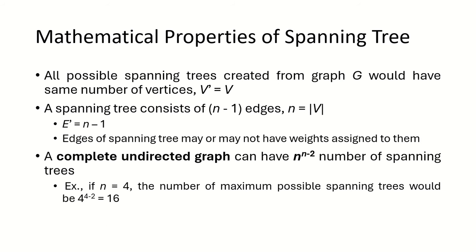Every connected and undirected graph will have at least one spanning tree, though it can have more than one as well. There is no spanning tree of a disconnected graph. All possible spanning trees created from the graph have the same number of vertices — V-dash equals V — and if the number of vertices is n, then the spanning tree will consist of n minus 1 edges.